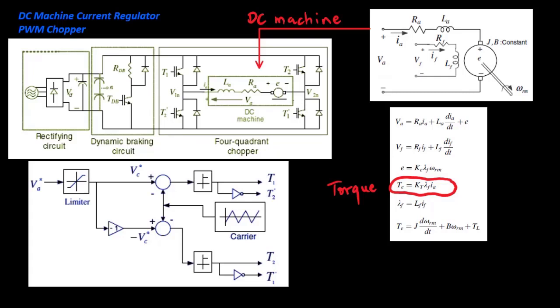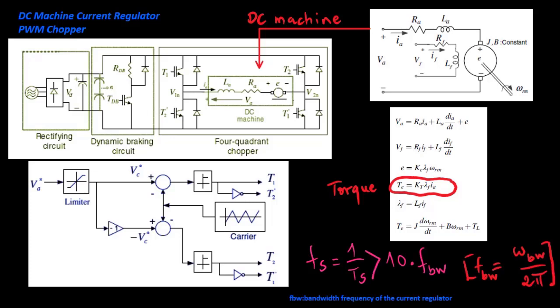For the torque control of a DC machine whose power rating is less than several tens of kilowatts, the four-quadrant DC-DC power converter described is widely used. The switching frequency fs of the power semiconductors in the power converter is usually much larger than the bandwidth frequency of the current regulator.